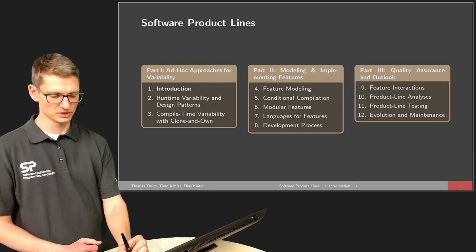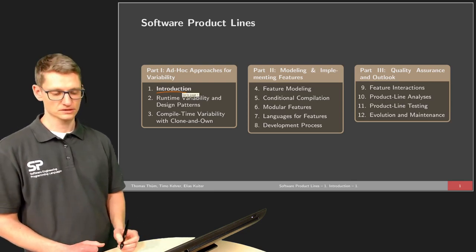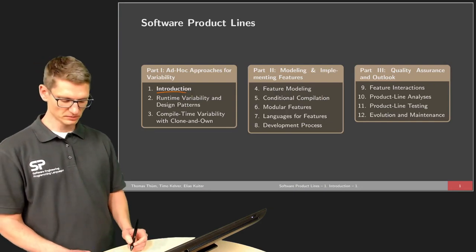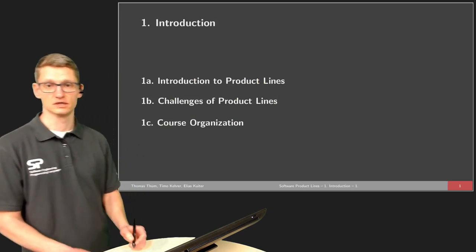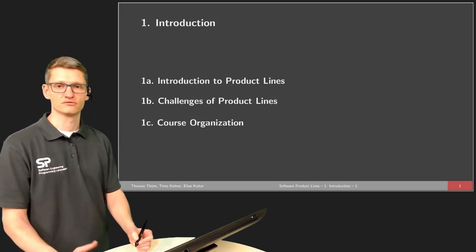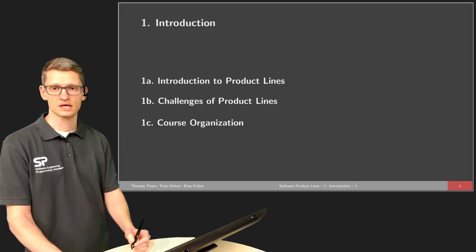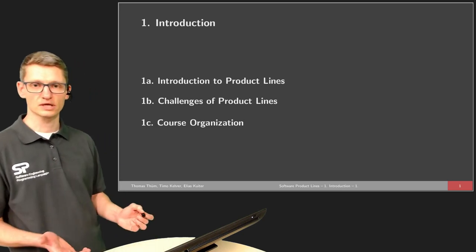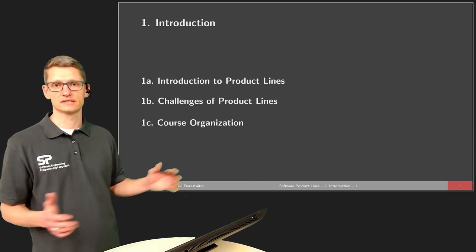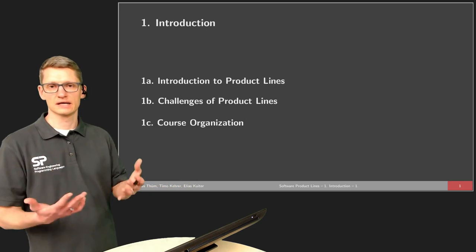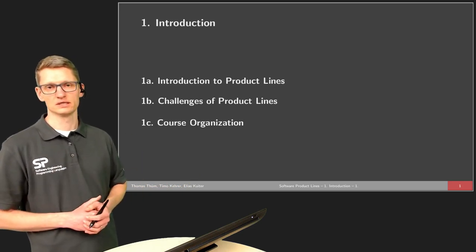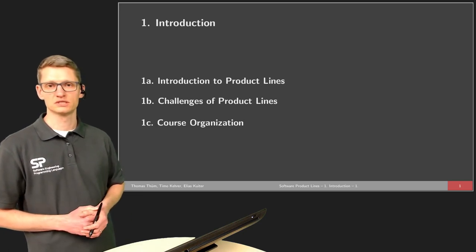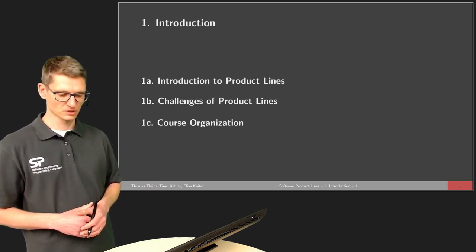Today's lecture will be the introductory lecture with three parts. First, we will give some definitions of what a product line actually is, with a lot of examples. In the second part, I would like to give a brief overview of the main challenges of Software Product Lines — six challenges we will see over and over again in later lectures. In the last part, we will give more details on the organization of this course.